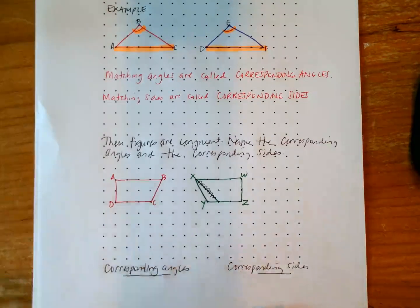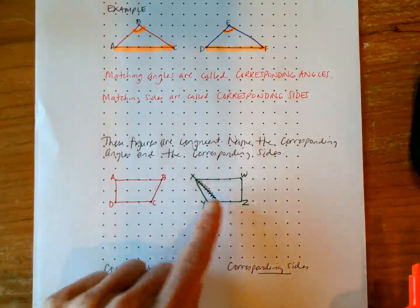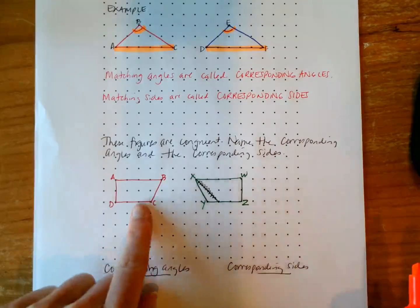So these figures are congruent. I apologize for the scratch out there. Try to ignore that. So we're going to name the corresponding angles and the corresponding sides. The first thing you might notice, you might be tempted to say, well, these aren't the same size and shape. These are not congruent because they look like they are a reflection of each other.